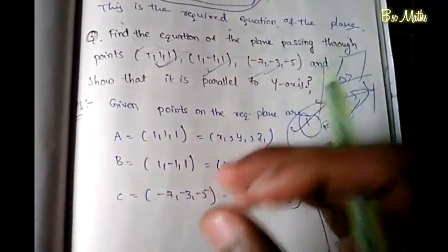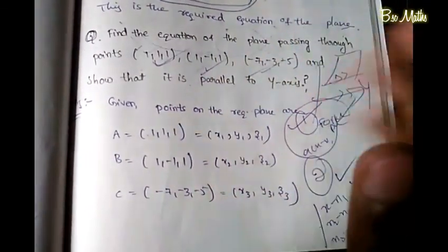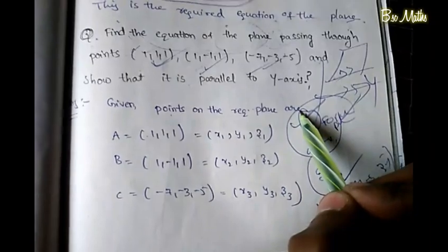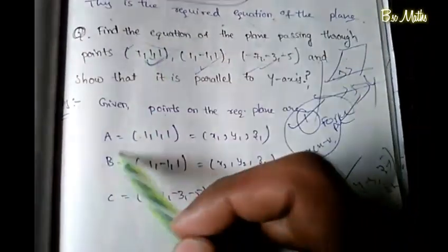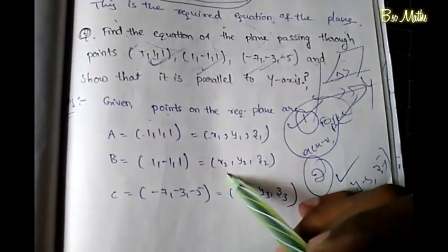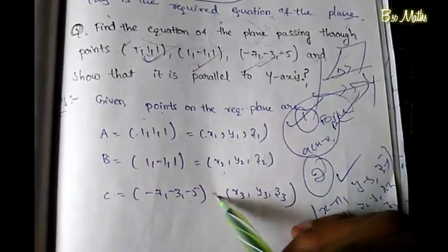I will do the first method. Given the required plane, let point A equal (1, 1, 1), which is (x1, y1, z1). Next, point B equals (1, -1, 1), which is (x2, y2, z2). Then point C is (-7, -3, -5), which is (x3, y3, z3).